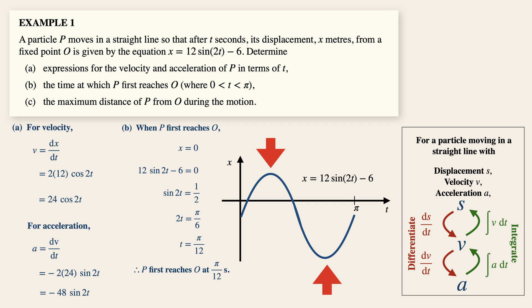Now the maximum displacement happens when it reaches the highest point. And at this highest point or the lowest point, the gradient, or dx over dt, is equals to zero. And dx over dt is simply velocity.